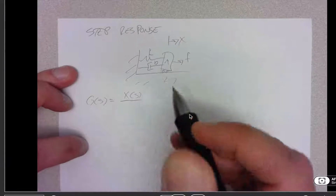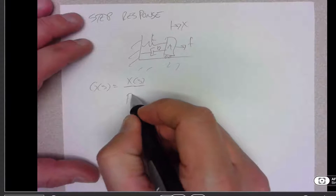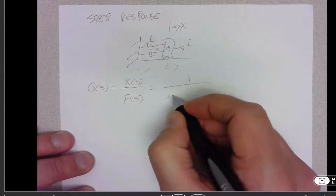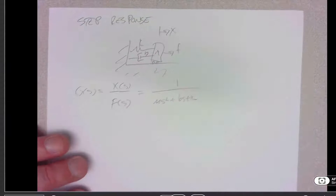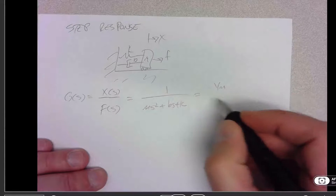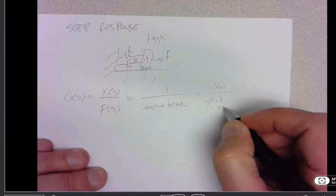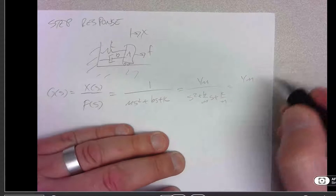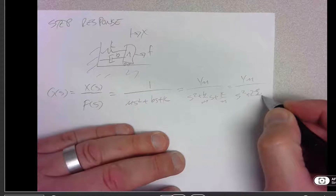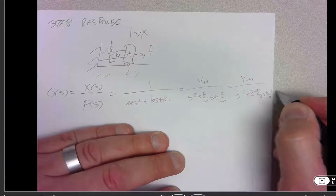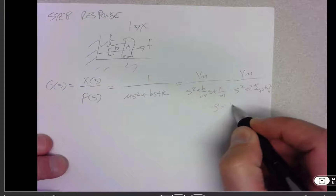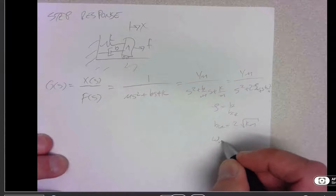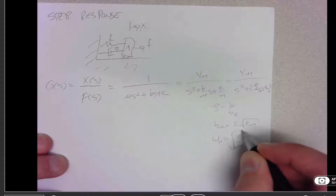Let's talk briefly about the step response of our mass-spring-damper system. We have a transfer function x(s) over f(s). Applying Newton's second law and drawing a free body diagram, we end up with a standard form. Based on the definition that zeta is equal to b over b-critical, b-critical is 2 times the square root of km, and omega-n is equal to the square root of k over m.